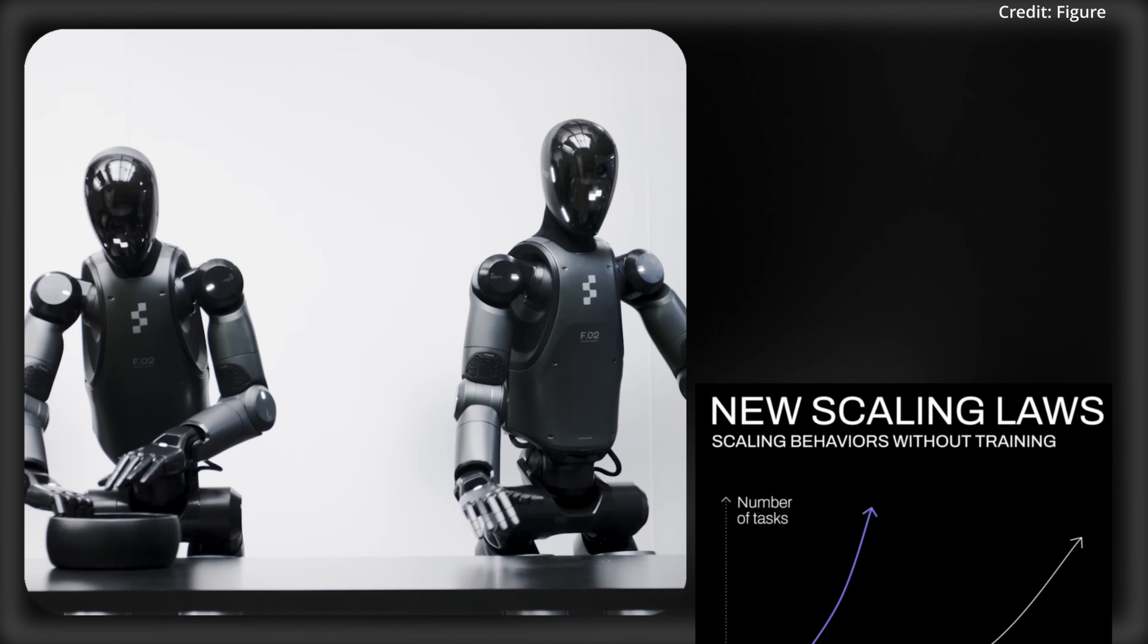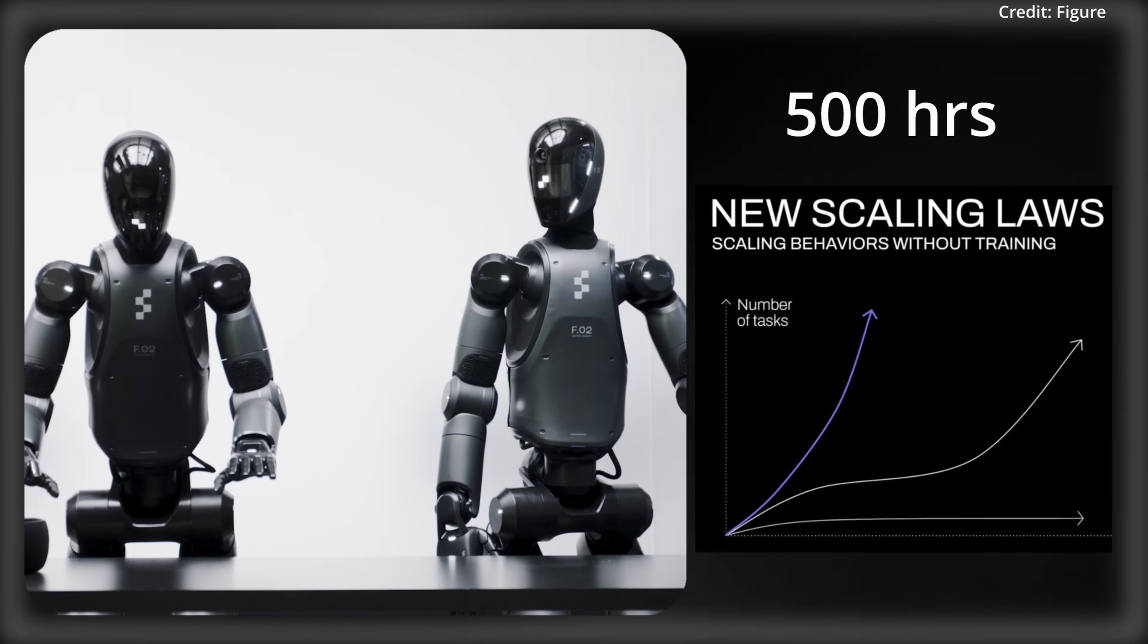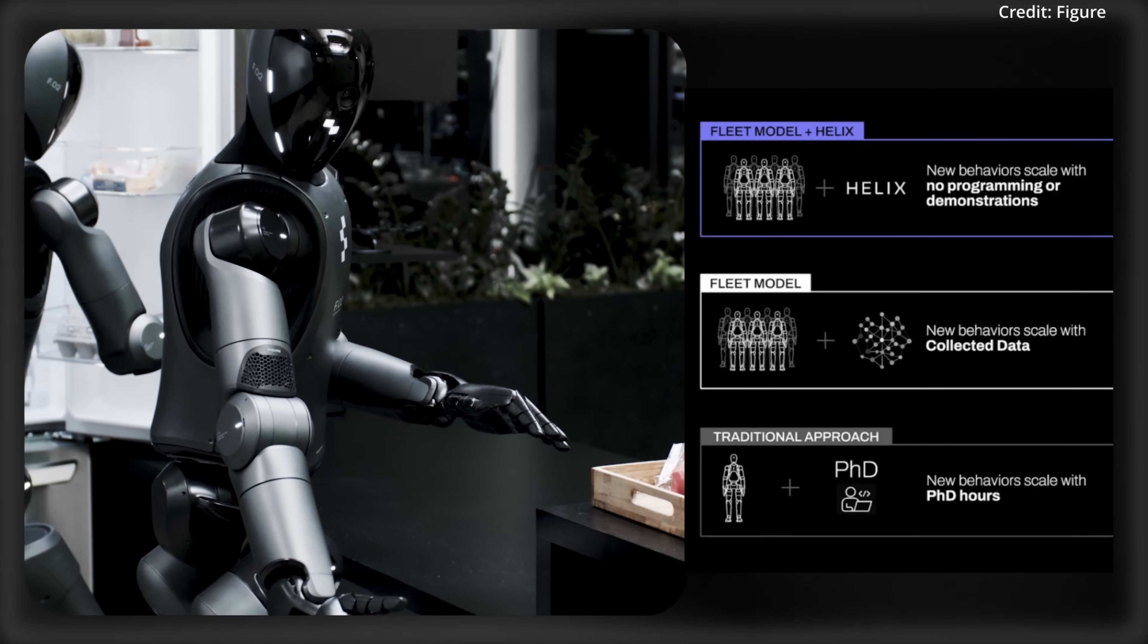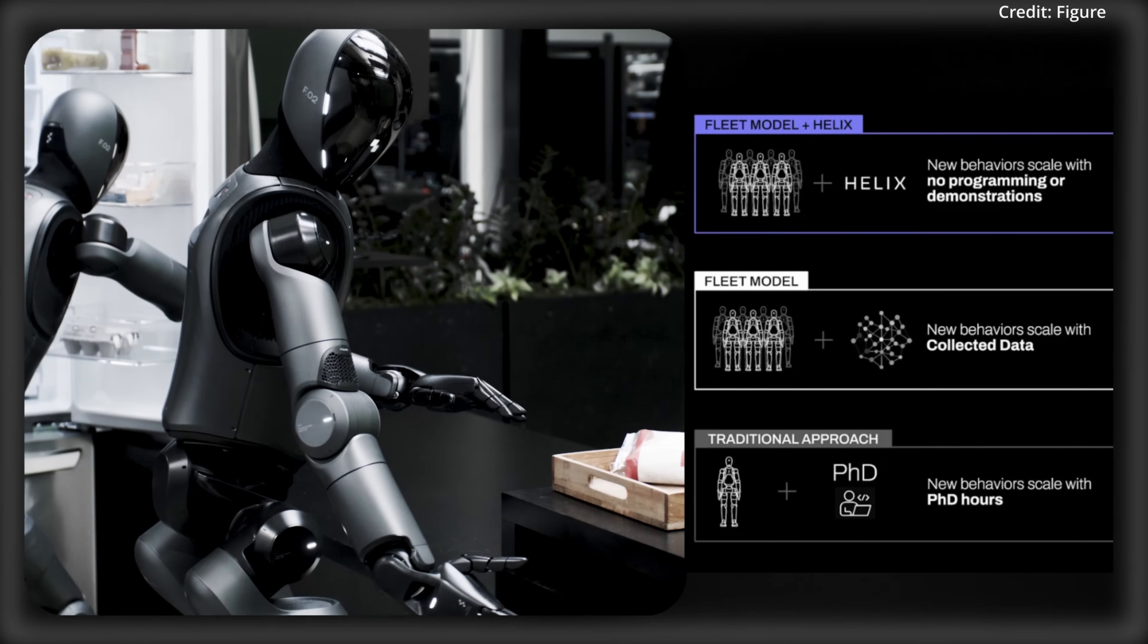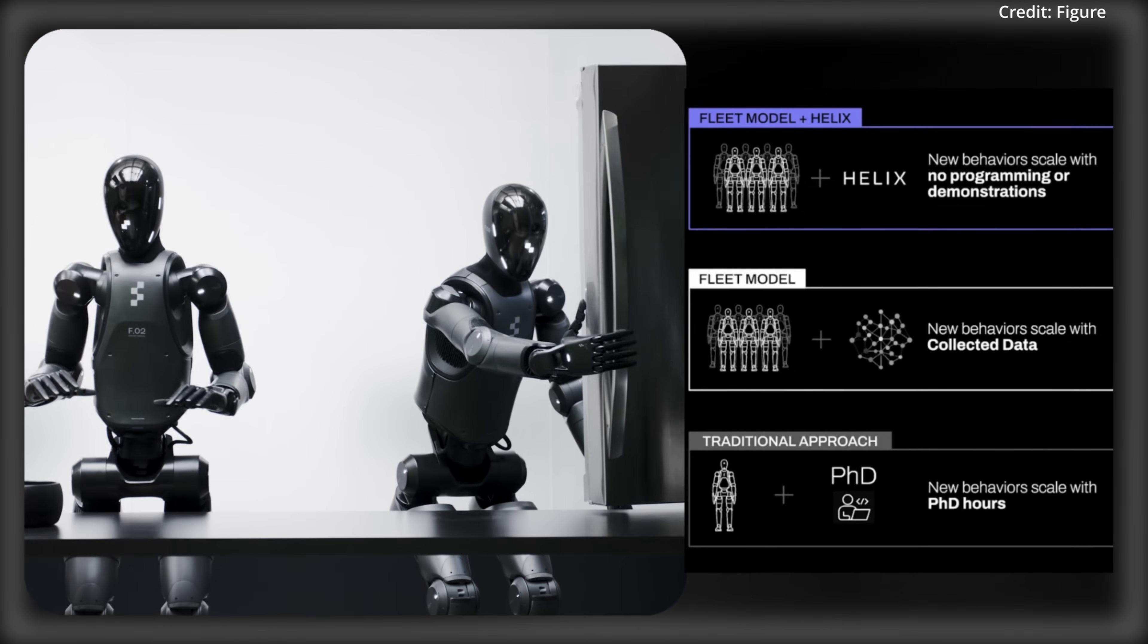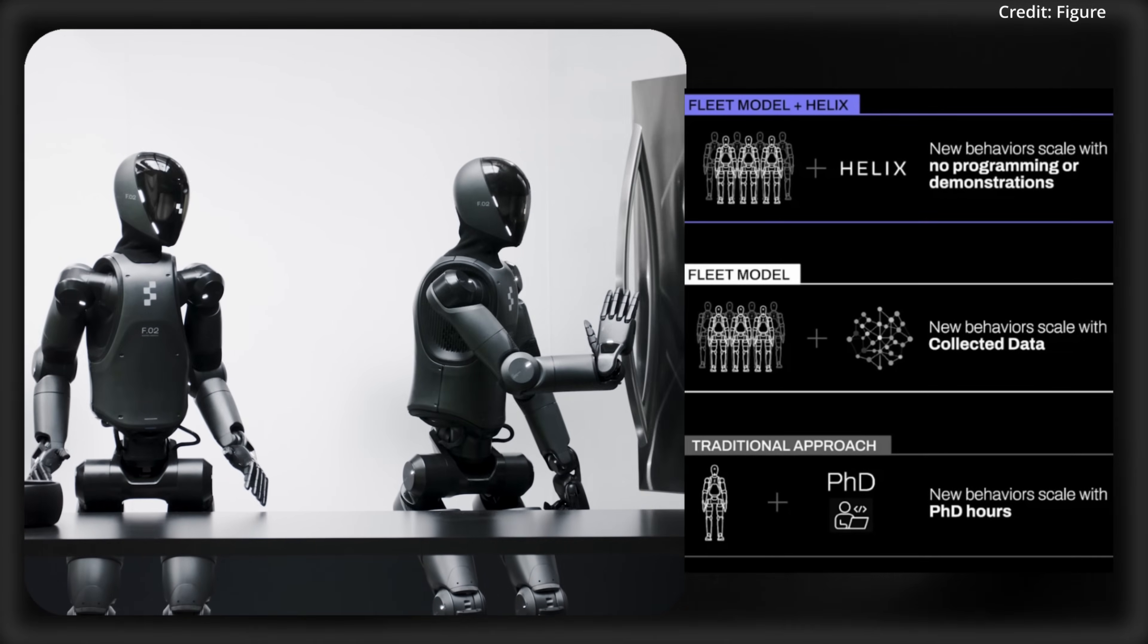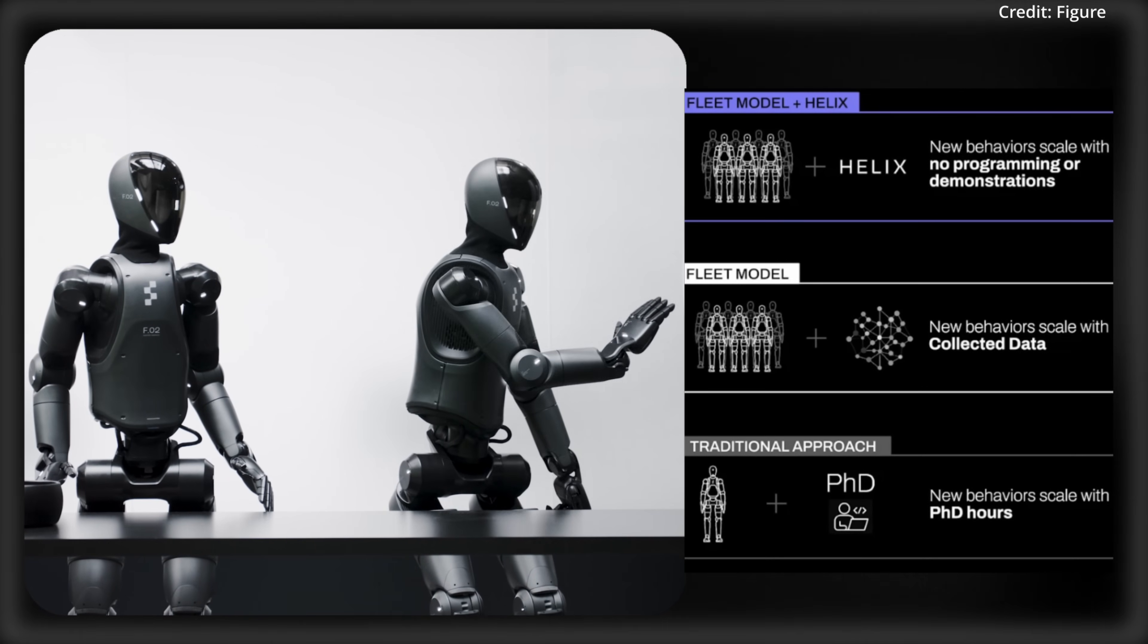Plus, because it's built with open-source components and trained on 500 hours of tele-operated data, Helix is extremely lean and uses just 5% of typical VLA datasets. As a result, its decoupled systems evolve independently, blending speed, scalability, and simplicity into a powerhouse model.